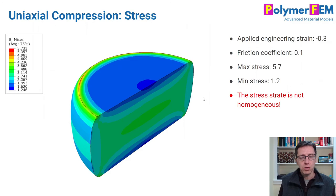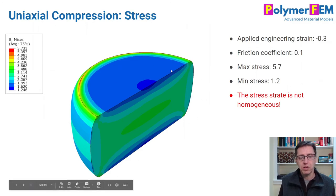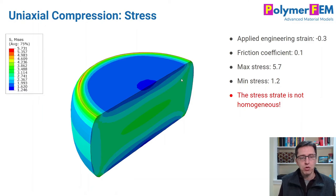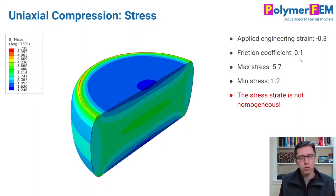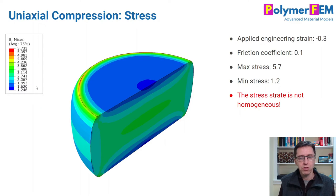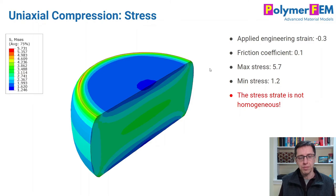Here's another figure showing a cross-section of the specimen from a finite element simulation. We can look at the distribution of stresses in the specimen. In this case, the applied strain was minus 0.3 — so 30% compression — with a friction coefficient of 0.1. Not a super large friction coefficient, but not zero either. What we see, which I think is fascinating, is that the maximum Mises stress is over 5 MPa, while the lowest value anywhere is about 1–1.2 MPa. It's a huge difference between the max and min stresses — clearly not homogeneous, even with a friction coefficient as low as 0.1.